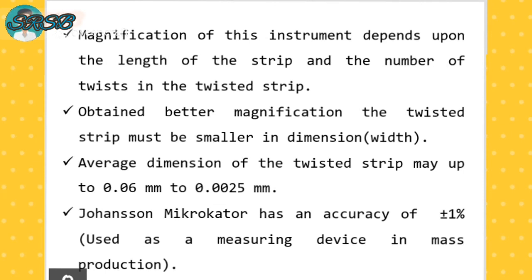Magnification of this instrument depends upon the length of the strip and the number of twists in the twisted strip. To obtain better magnification, the twisted strip must be smaller in dimension. The Johansson Microkator has an accuracy of plus or minus 1 percent.